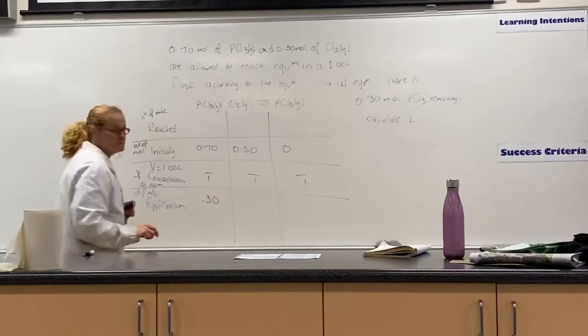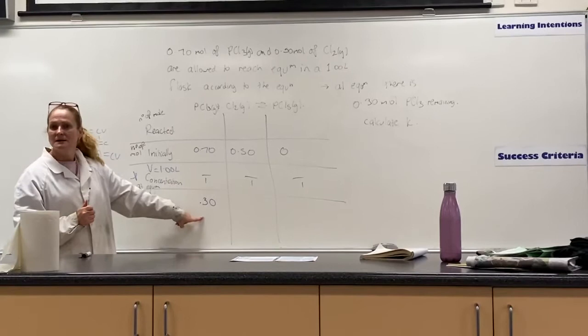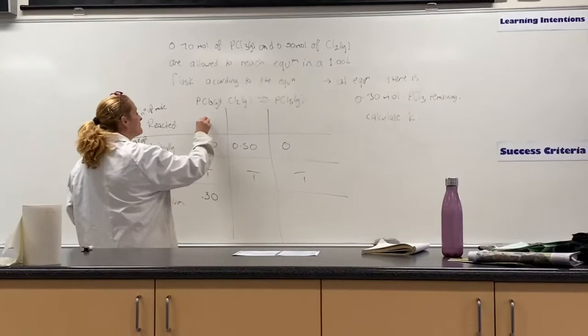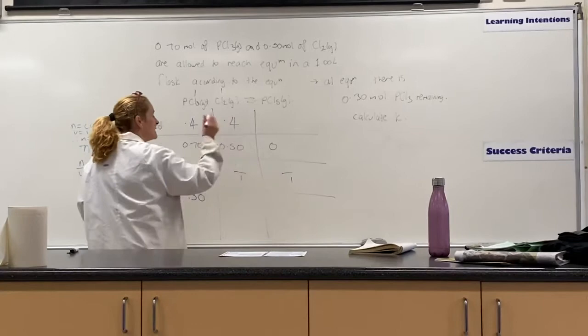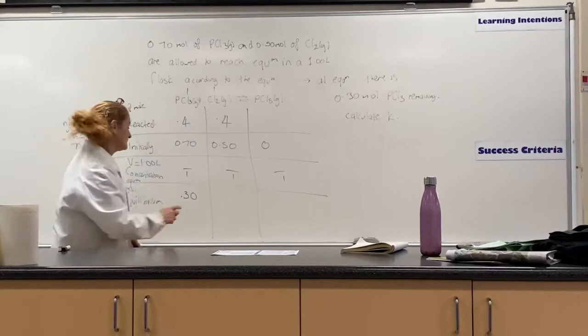So we fill in the table. So I've got two columns here of that filled in. So if I started with 0.7 and I've got 0.3 remaining, can I get the amount that reacted? Yep, how much? Sorry, 0.4. Pardon? 0.4. Yeah, so I know that 0.4 of that reacted. Now, the bonus is that if 0.4 of that reacted, because these are one to one, how much of this would have reacted? 0.4. So if I started with 0.5 moles and 0.4 reacted, can I work out how much is at equilibrium? How much is at equilibrium? 0.1. 0.1. Does that make sense so far?